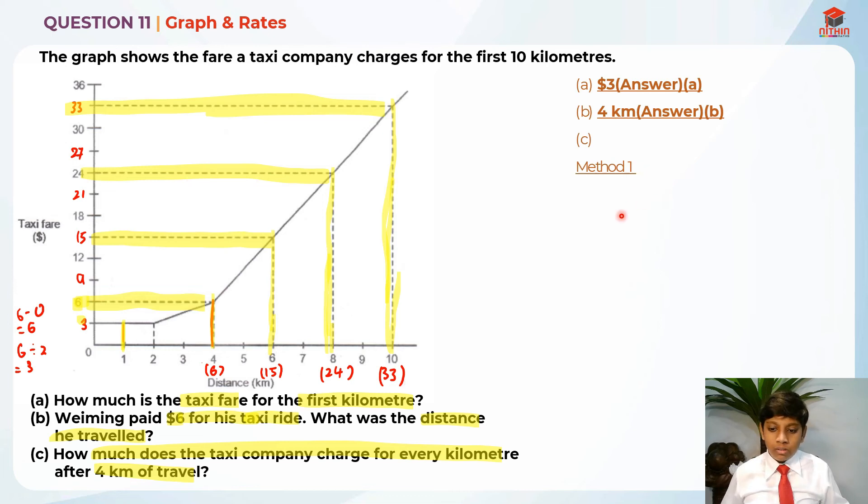For part C, method 1 is to take the difference of 4 and 6. So 6 minus 4 is 2. After that, I'm going to take 15 minus 6. So 15 minus 6 divided by 2, because there's two gaps here. In order to find one line, which is each kilometer, divide by two gaps to give me one line. When I divide by 2, it gives me $4.50. So each kilometer is $4.50.